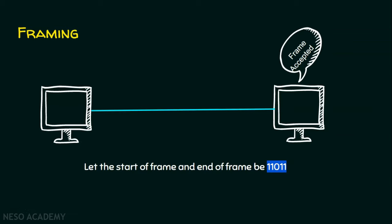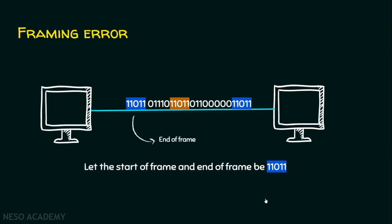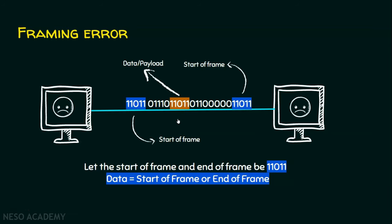However, there is a serious problem. Can you figure out the problem in this scenario? There is a sequence 11011 in the data part as well. According to the sender, whatever it received from the network layer, it adds the start and end sequences. But this data has nothing to do with the data link layer framing. So we have 11011 as the end of the frame, 11011 as the start of the frame, and another 11011 that is just data or payload — resembling the start and end of the frame.